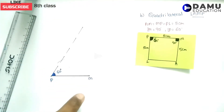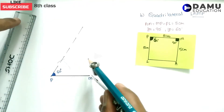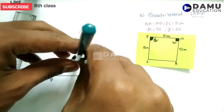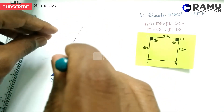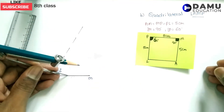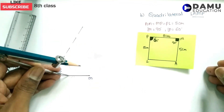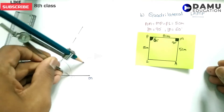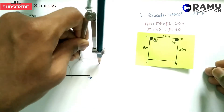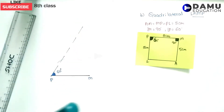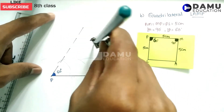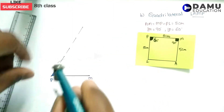Next, we need to construct a 90 degree angle at M. From this point, we need to construct 60 degrees and then 120 degrees. If you bisect the angle between 60 and 120, then we will get exactly 90 degrees.